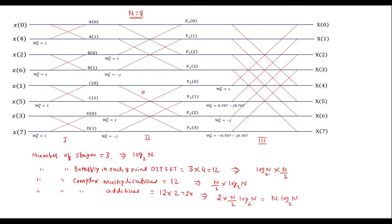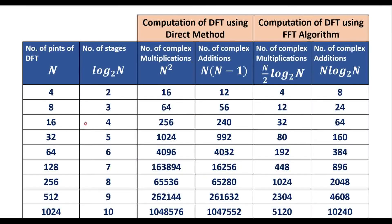Now I will compare the number of complex multiplications and complex additions required for different values of N in case of direct computation and using the FFT algorithm. This table shows the comparison: the number of DFT points is N, number of stages is log₂N. Complex multiplications in direct method: N². Complex additions in direct method: N(N−1). Complex multiplications in FFT: (N/2)·log₂N. Complex additions in FFT: N·log₂N.